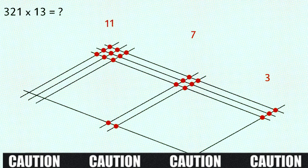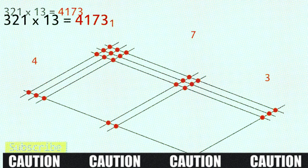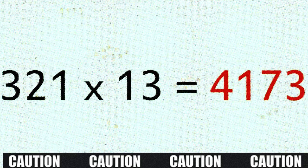So again, we leave the last digit there, carry the first digit over to the next zone and add it to the dots. 1, 2, 3, plus 1, gives us 4. 4, 1, 7, 3. So our answer, 321 times 13 is 4,173.